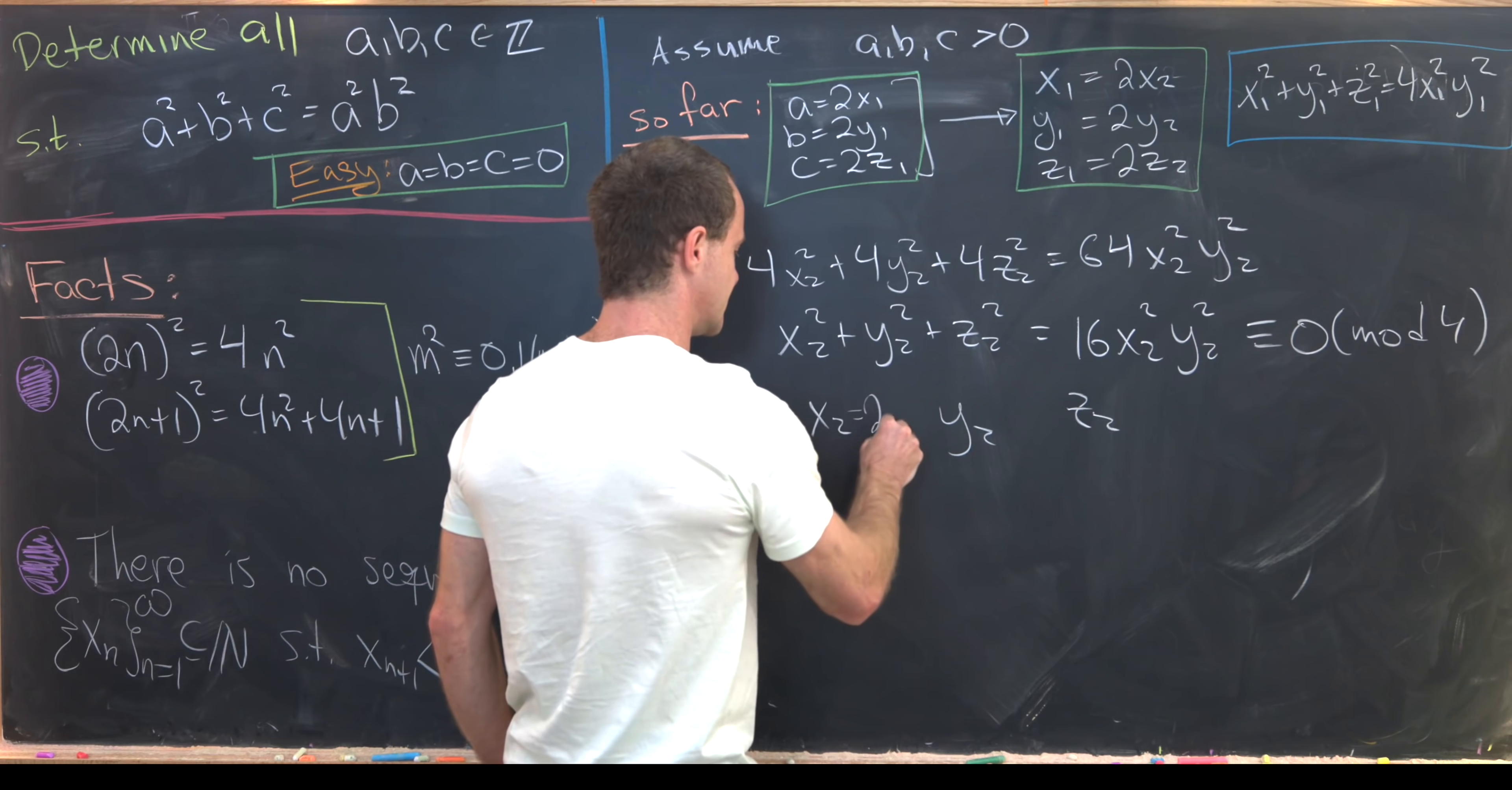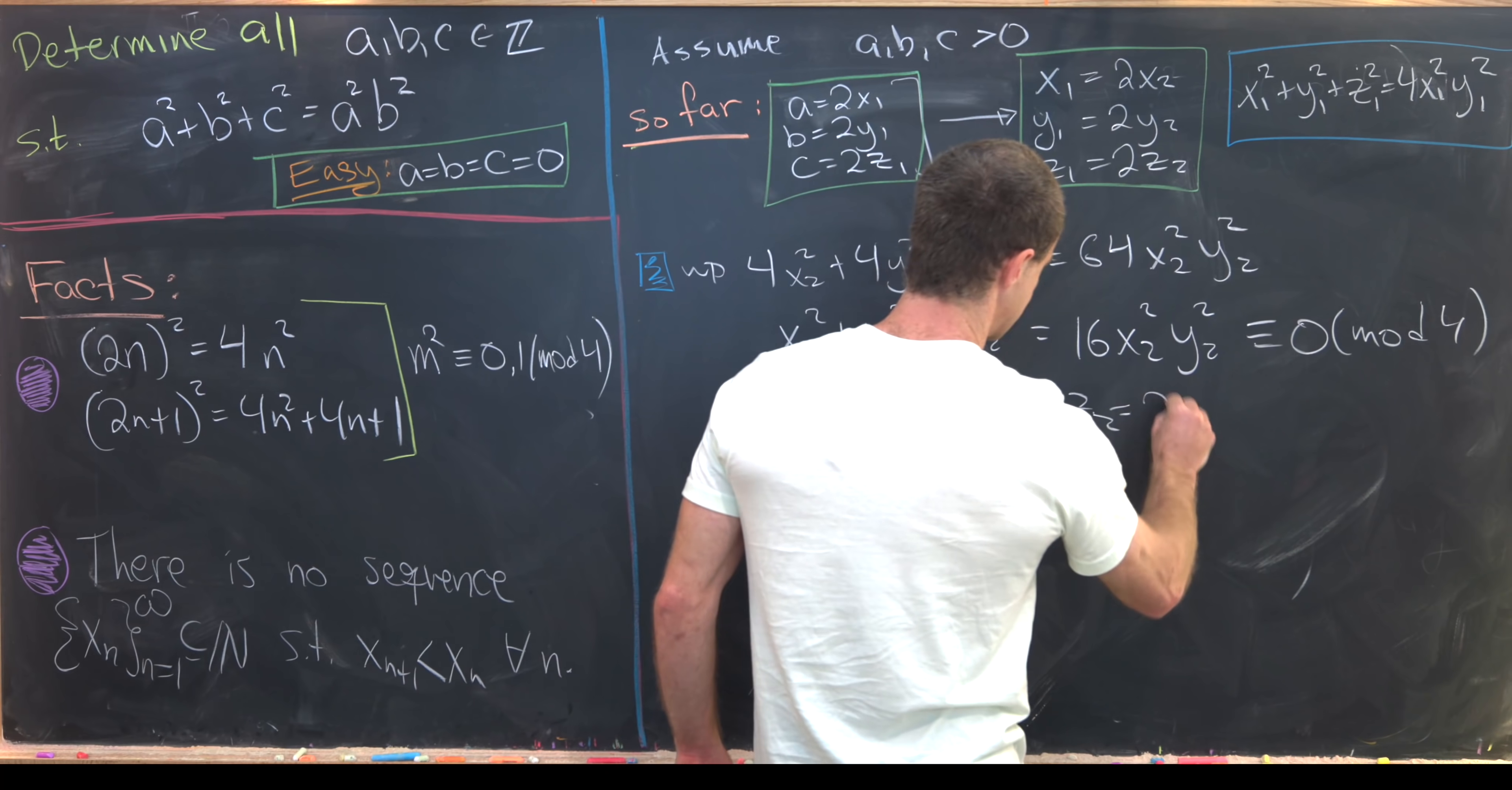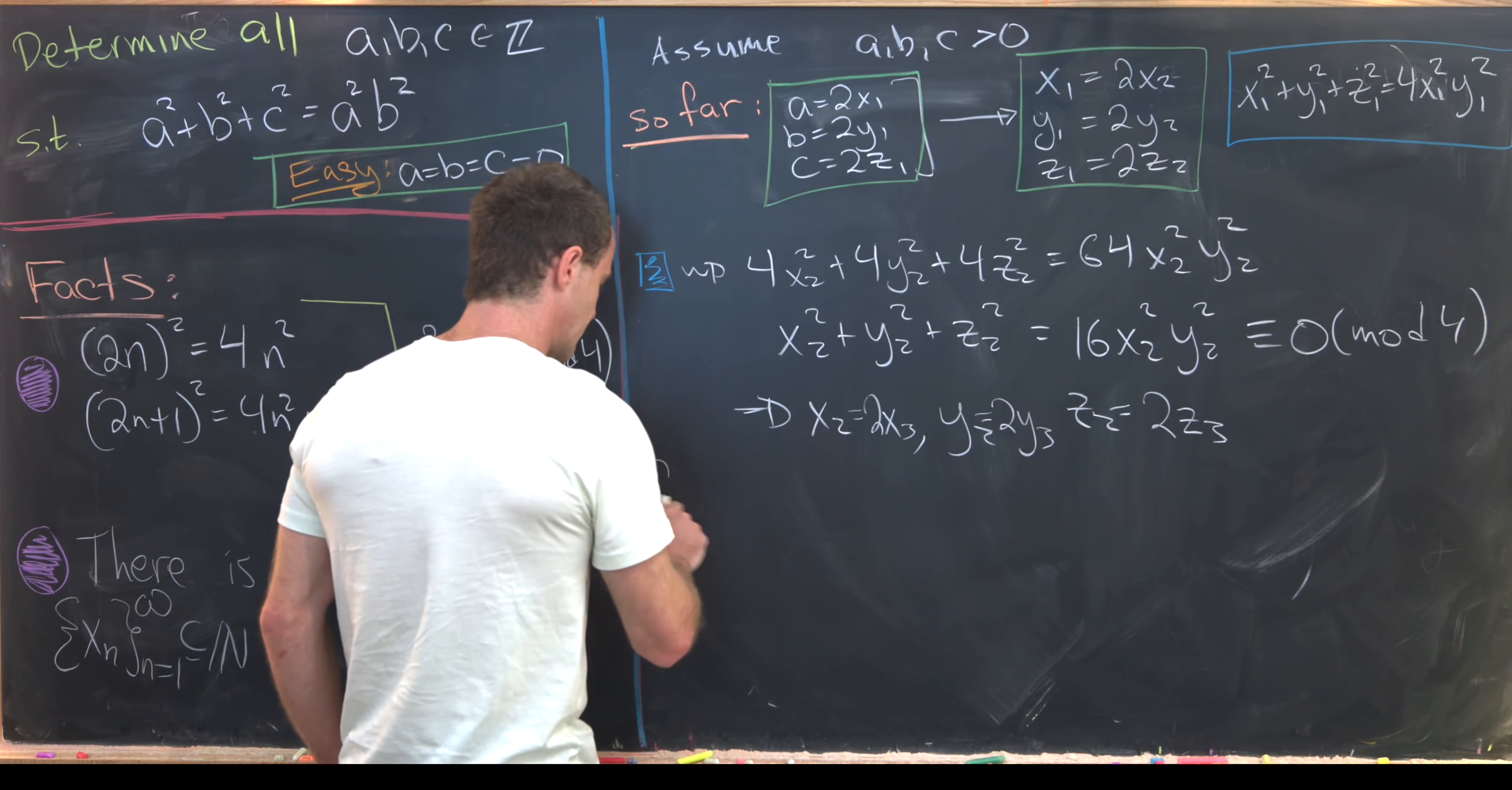That means x₂ = 2x₃, y₂ = 2y₃, and z₂ = 2z₃. So let's see what we've done. So continuing, we create three sequences of natural numbers.